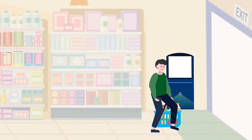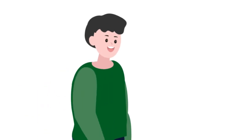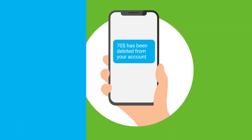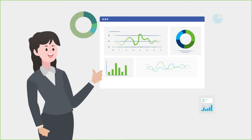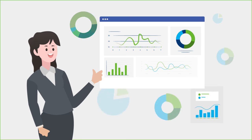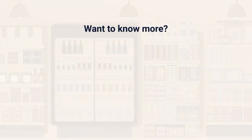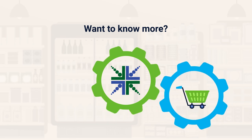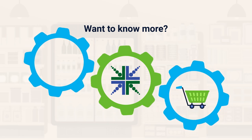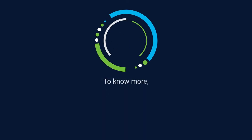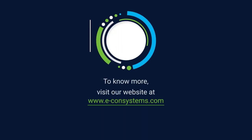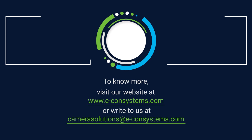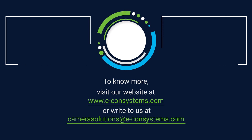Now with vision-enabled smart trolley and checkout systems, John can skip the queue at the counter, Grace can reduce her manual efforts, Jordan builds a cool product, and Elisa gets to analyze data to further improve shopping experience at the store. Want to know more about how Econ Systems can help enhance the performance of your smart trolley and smart checkout systems using Vision? Visit our website by clicking the link in the description or write to us at camerasolutions@EconSystems.com. Thank you.